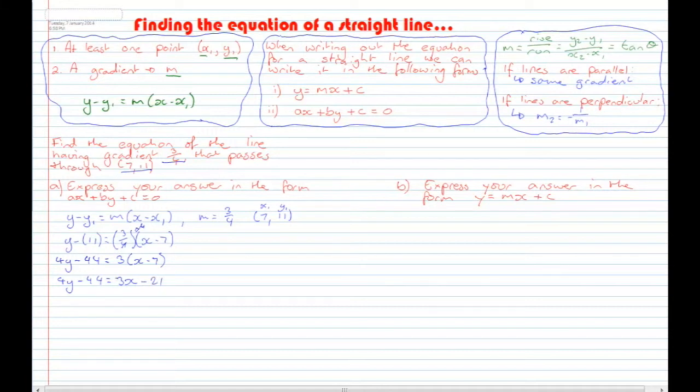Rearrange now to get everything on the one side and make it equal to 0. So what we'll do is we'll go 4Y, I'll minus the 3X from this side, and then I'll add 21. So minus 3X from both sides, and then add 21 plus 21. The 21's will cancel out. So -44 plus 21 equals 0, and I get 4Y - 3X - 44 + 21 ends up being -23 equals 0.